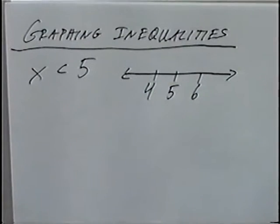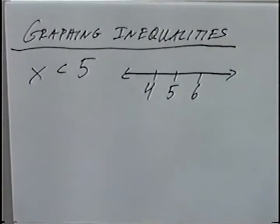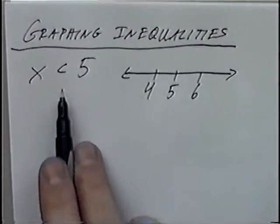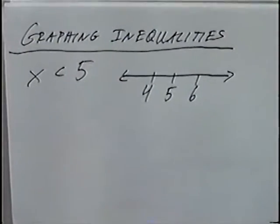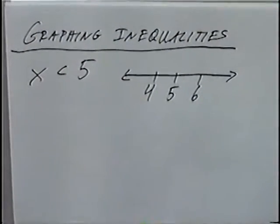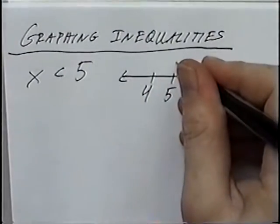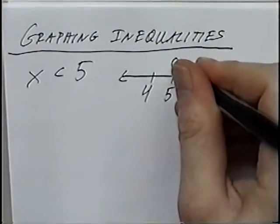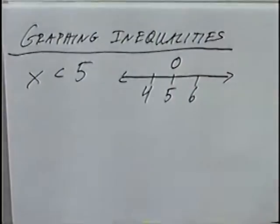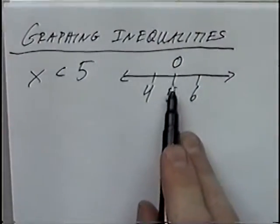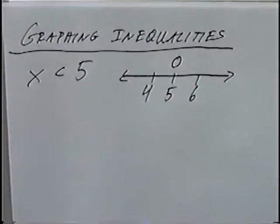To graph inequalities, inequalities will have circles — either open circles or closed circles. In this case we have the less than symbol. The less than symbol uses an open circle. The open circle for this graph I'll put above the number line; you could also put the circle on top of the number line.